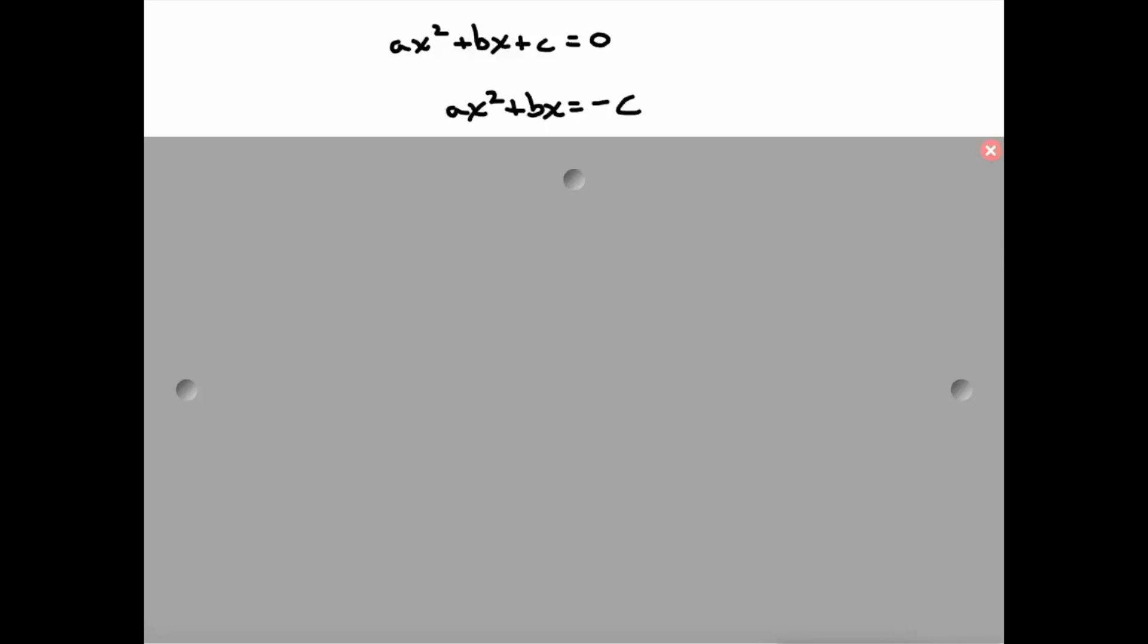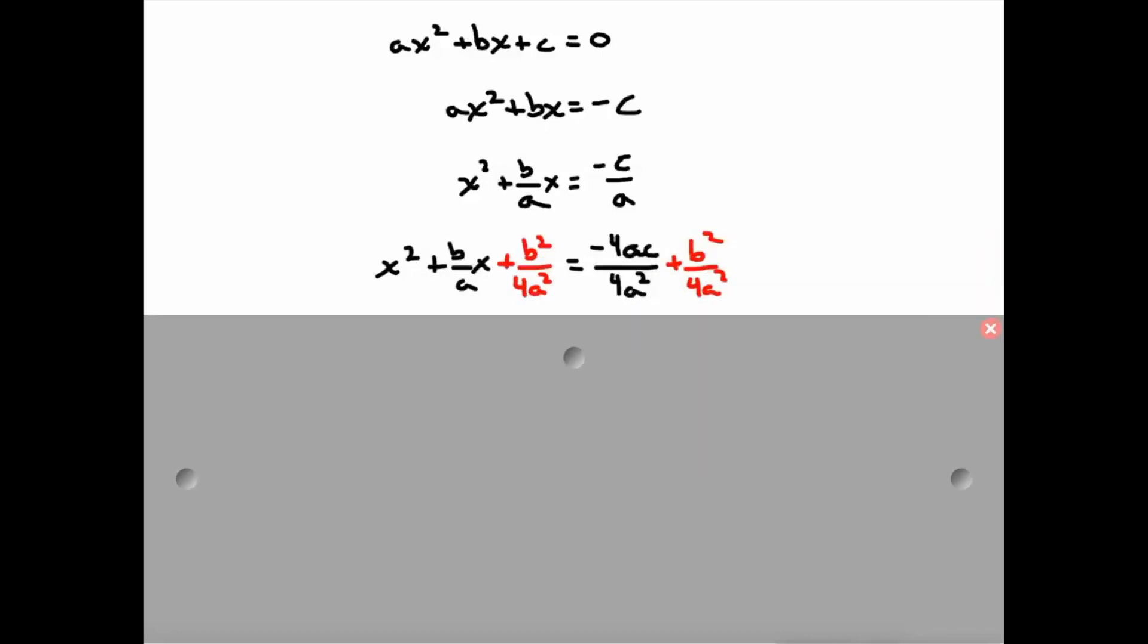We start off by subtracting c from both sides. Then, before I can complete the square, my lead coefficient needs to be a, so I'm going to divide everything by a. I know it's already kind of getting ugly. Now, we can complete the square, so I'm going to take half of b over a and square it. So that would be b over 2a and square it, which is b² over 4a².